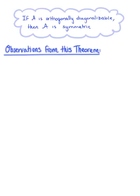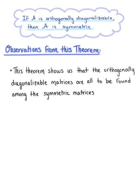Before we continue our exploration, let's pause and really think about what this last theorem is telling us. This theorem says that if A is orthogonally diagonalizable, then A is symmetric. So this theorem shows us that the orthogonally diagonalizable matrices are all to be found among the symmetric matrices.